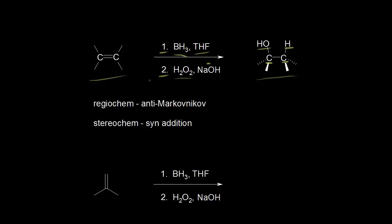How do we know which carbon to add the OH to, and which carbon to add the H? We think about the regiochemistry for this reaction, and it turns out to be anti-Markovnikov, which means the OH adds to the less substituted carbon. To understand this, we need to look at the mechanism, which is in the next video. Also in the next video, we'll go into the details about the stereochemistry — it turns out to be a syn addition, which means the H and the OH add to the same side.